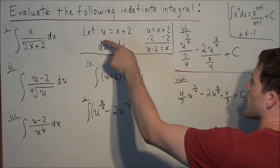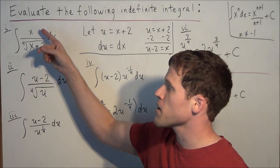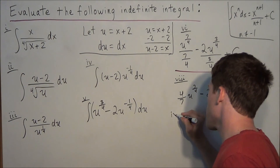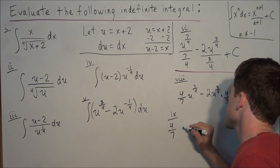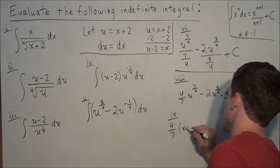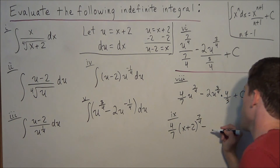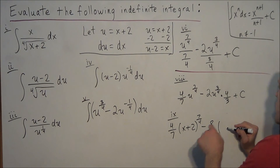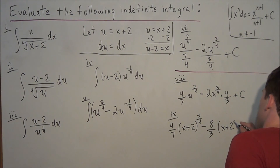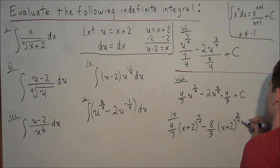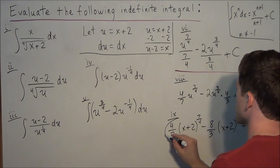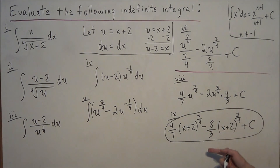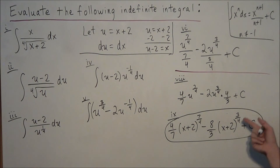We need to substitute back for u, since our original problem was in terms of x and our final answer must also be in terms of x. Replacing u with x plus 2: we have four-sevenths times x plus 2 to the seven-fourths. For the second term, 2 times four-thirds equals eight-thirds, so we have minus eight-thirds times x plus 2 to the three-fourths, plus c. Our final answer is four-sevenths times x plus 2 to the seven-fourths, minus eight-thirds times x plus 2 to the three-fourths, plus c.